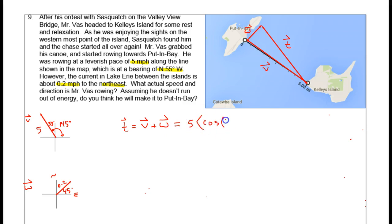We had this equation from a previous problem: the true vector is equal to the other vector plus the wind or water vector. Vector V is the course I set out on, and the water vector pushes me off course to a true vector. We can convert V and W into their component forms. Vector V is 5 times the cosine of 145 degrees and the sine of 145 degrees. Vector W is 0.2 times the cosine of 45 degrees and the sine of 45 degrees.